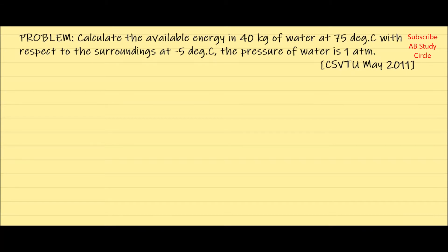In this video, we have this problem. This problem has been asked in the CSV2, that is the State Government Technical University in the state of Chhattisgarh, in the month of May in the year 2011. The question says: calculate the available energy in 40 kg of water at 75 degrees Celsius with respect to the surroundings at minus 5 degrees Celsius. The pressure of water is 1 atm.